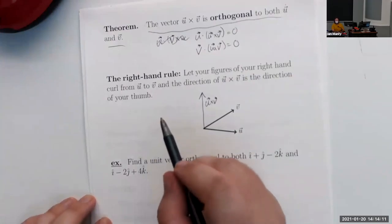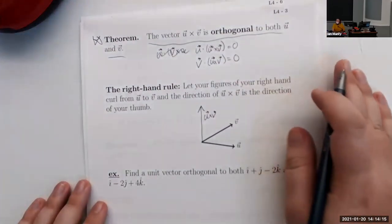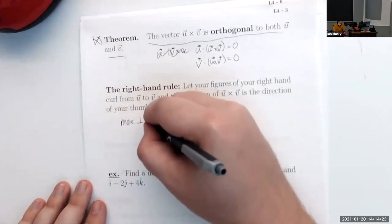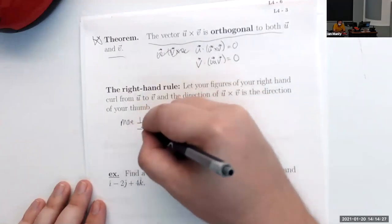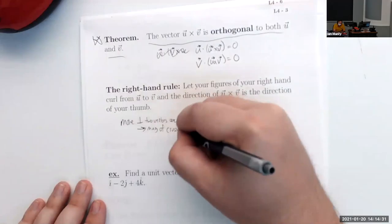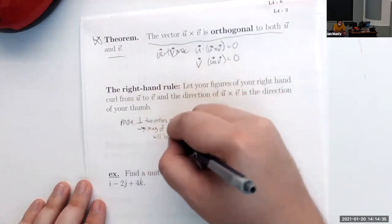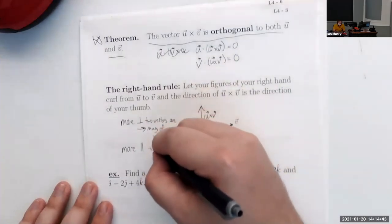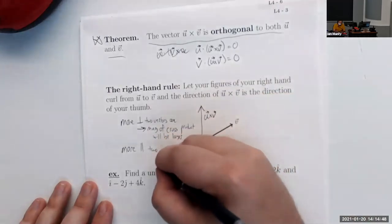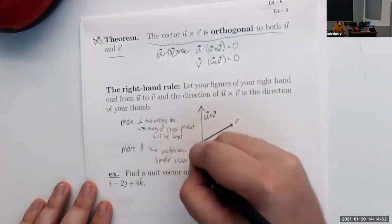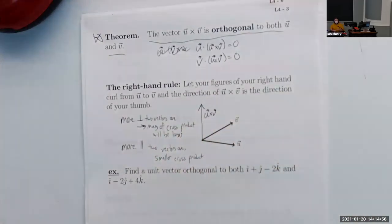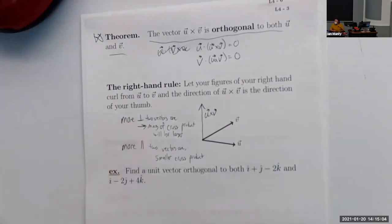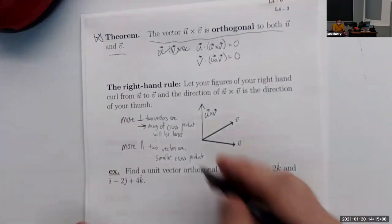Another property: the more perpendicular two vectors are, the larger the cross product will be. The more parallel two vectors are, the smaller the cross product will be. This is almost the opposite of the dot product, which was largest when vectors were parallel and zero when perpendicular.